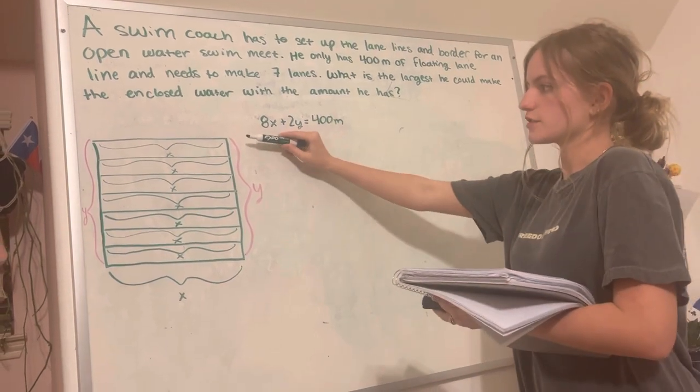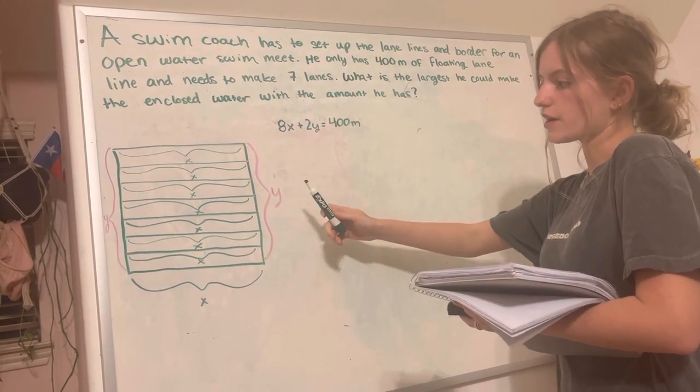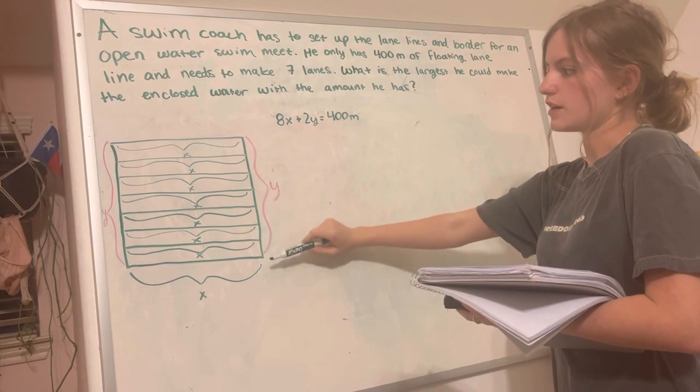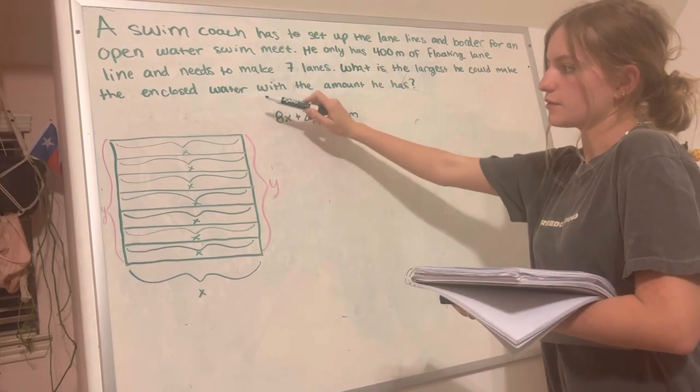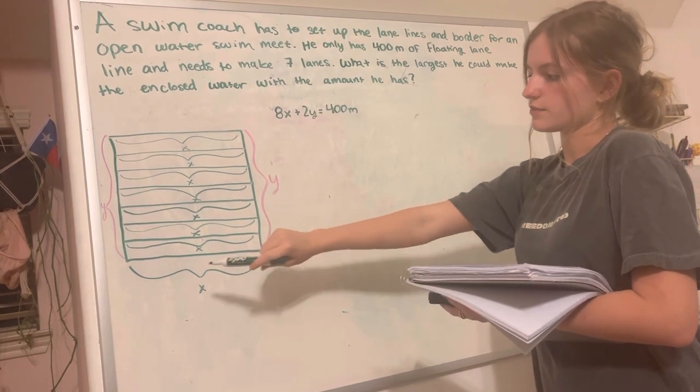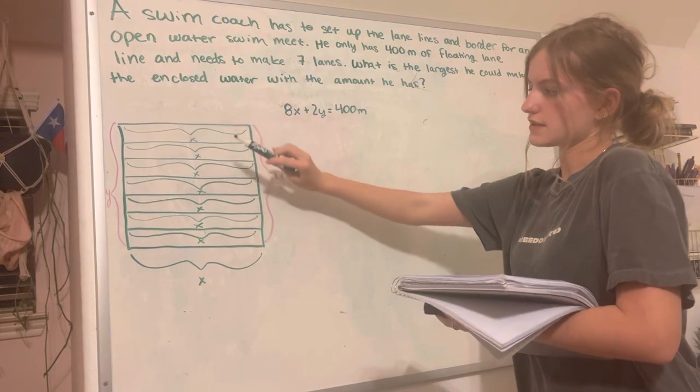This is the picture of what the word problem is asking for. Since it's in open water, it means that the lane lines will be on the borders as well. So y would be the width here, and then x would be the length, and we have eight x's, so that's seven lanes.